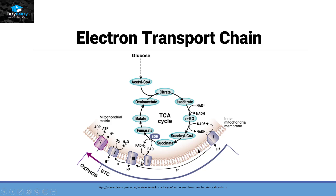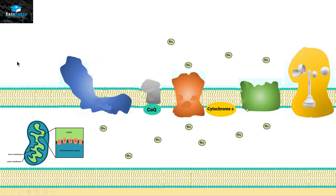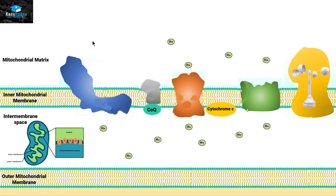The electron transport chain is present on the inner membrane of the mitochondria. This is the inner mitochondrial membrane, and on these membranes we have some embedded proteins that are going to help in the electron transport chain in order to make ATP. This is the outer mitochondrial membrane, this is the inner membrane space, this is the inner mitochondrial membrane, and this part is the mitochondrial matrix. The Krebs cycle was present in the mitochondrial matrix, and from this Krebs cycle, two electron carriers — NADH and FADH2 — come out.